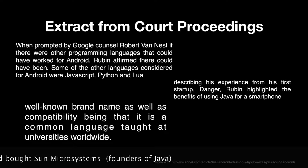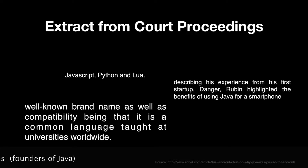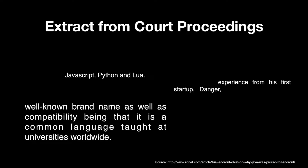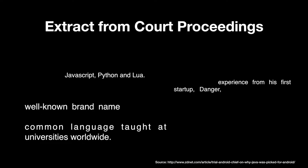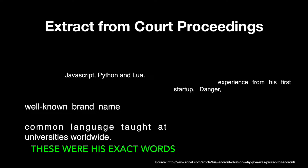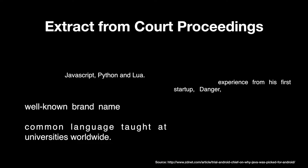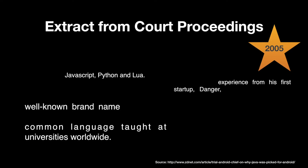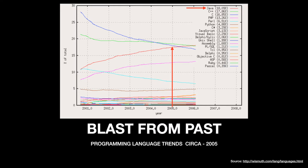When asked whether any other programming languages were considered, he clearly states that JavaScript, Python, and Lua were some of the candidates. Then why were these not chosen? He had previous experience with Java while working at his previous failed startup called Danger. Another most important reason is that Java was a well-known brand name, and during those times it was one of the most commonly taught languages in most universities. The year we are talking about is 2005 — even before Google bought Android Inc. If you look at which programming languages were dominant in 2005, it becomes quite apparent that Java was the most popular programming language.